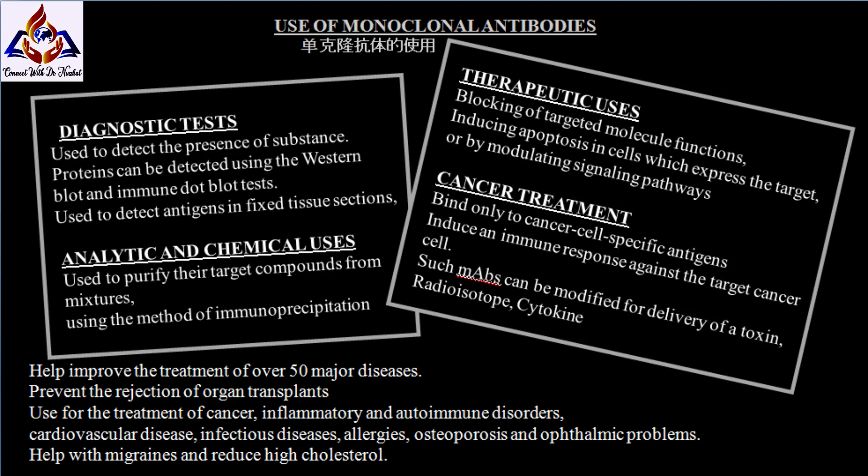In immunohistochemistry, monoclonal antibodies can be used to detect antigens in fixed tissue sections, and similarly, immunofluorescence can be used to detect a substance in either frozen tissue sections or liver cells. For analytical and chemical uses, antibodies can also be used to purify their target compound from a mixture using the method of immunoprecipitation.